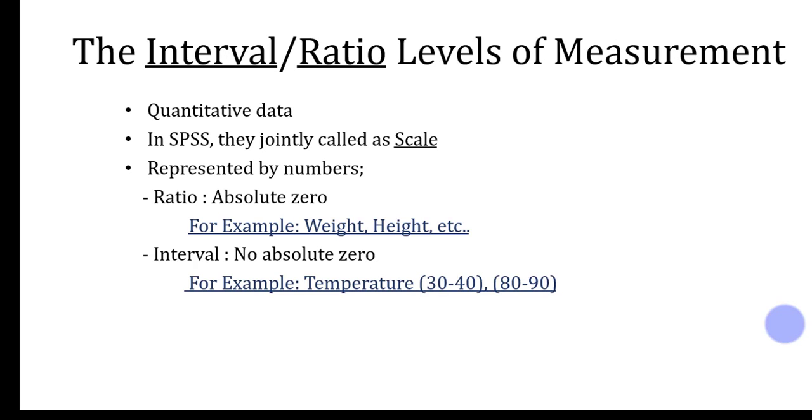In the last, we have interval and ratio levels of measurement. These are the subcategories of quantitative type of data. Basically, they both represent the actual numbers. So in SPSS, they jointly called as a scale. There is only one difference between interval and ratio. In interval, there is no absolute zero, but in ratio, there is an absolute zero.